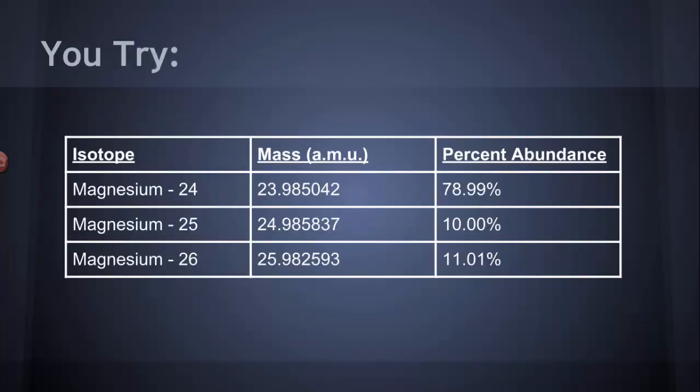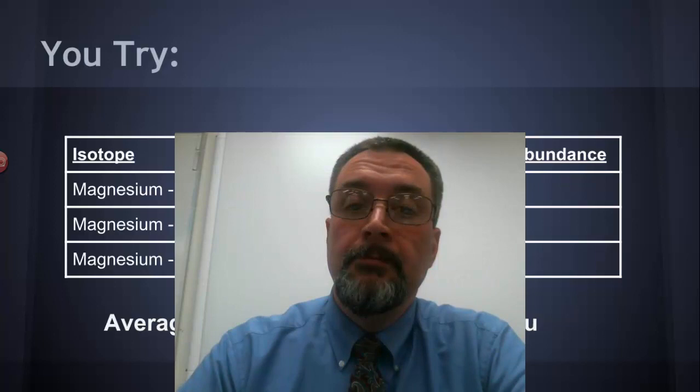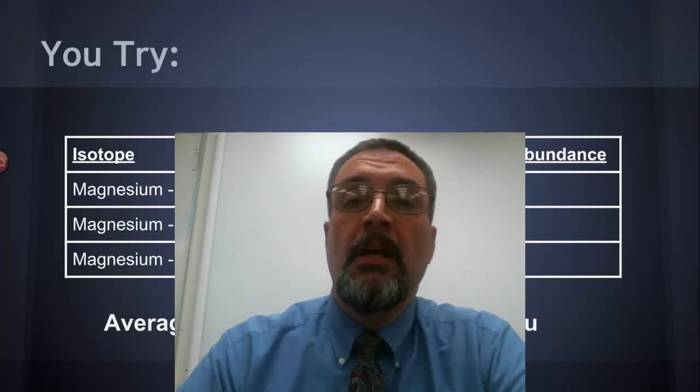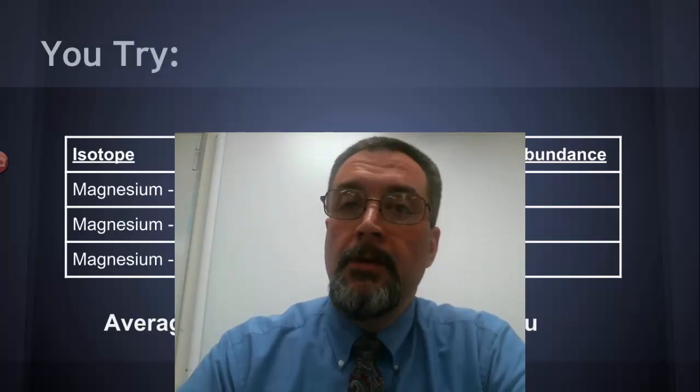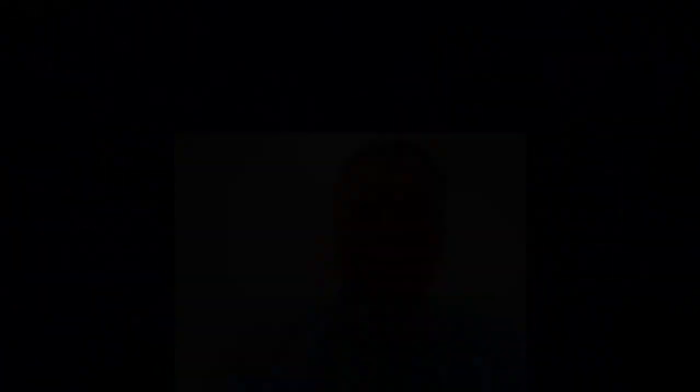Three magnesium isotopes. Magnesium comes in three varieties naturally. Magnesium-24, 25, and 26. Here are your masses. Here are your percent abundances. Stop the video. Do the calculation and see if you can calculate the average atomic mass of magnesium. All set? I got 24.30505. And if I look on the periodic table, 24.3051. Did you get that? If not, we'll have some more practice. But if you did, you're right on track. We'll pick up the next time.